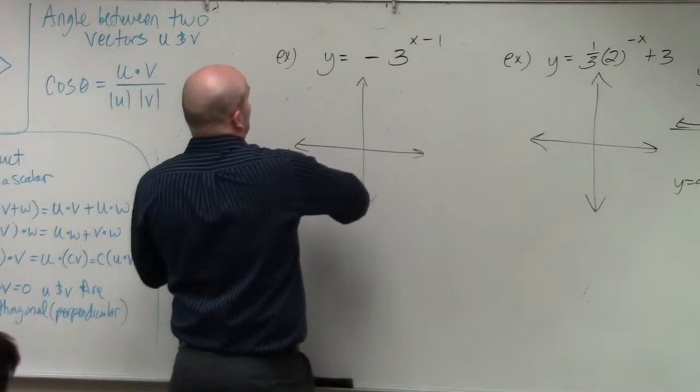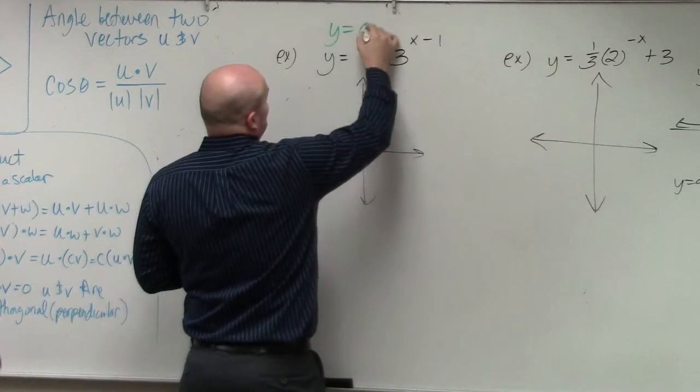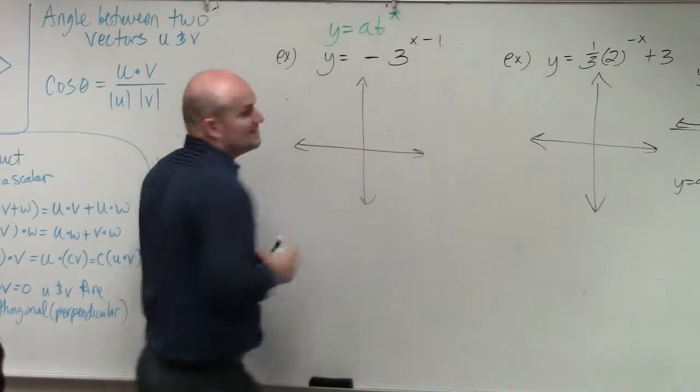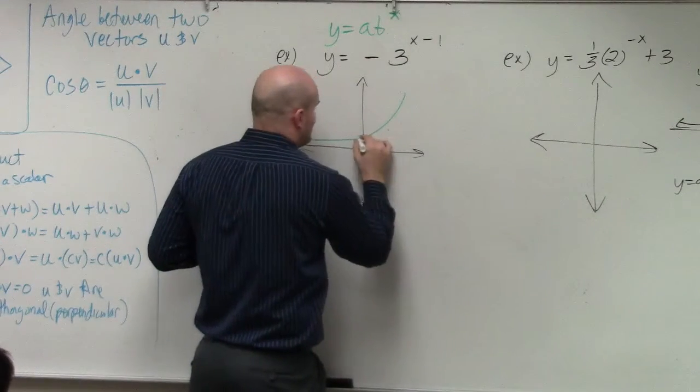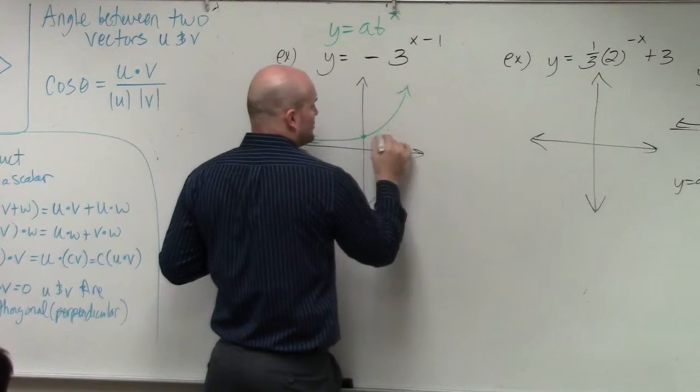So what I'm going to do is go back and review y equals a times b raised to the x. Again, when you're graphing this, the graph crosses at the value of a.